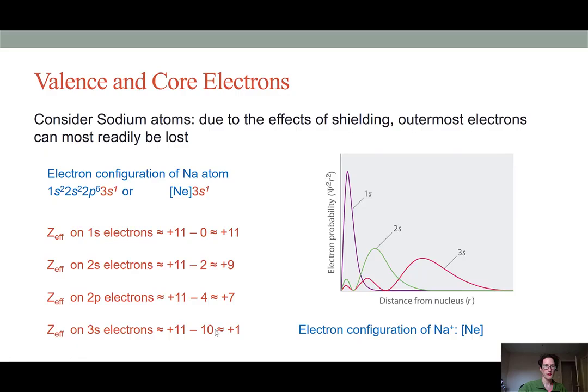And if a sodium ion were to lose this electron, it would end up with the electron configuration of Na plus being that of the noble gas neon. So it would have completely full 1s, 2s, and 2p orbitals, which is a favorable state to be in, rather than having this half full high energy electron shell of the 3s orbital.